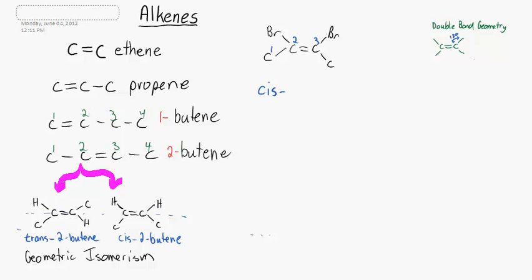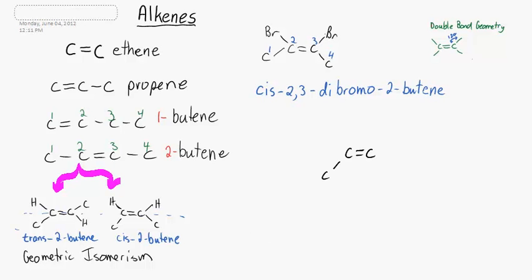We can have other side groups. Here we have 2,3-dibromo, and since they're on the same side, it's called cis-2,3-dibromo-2-butene.